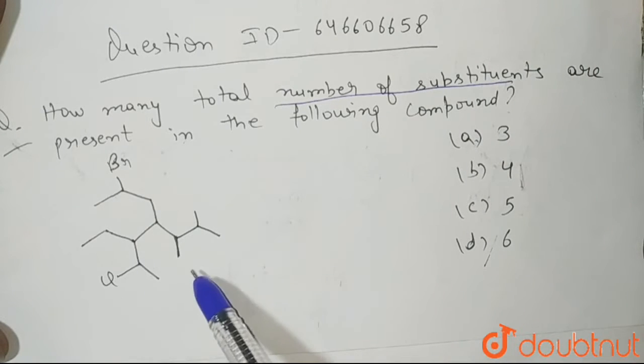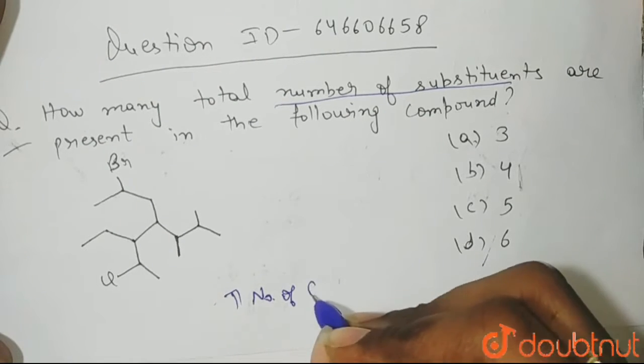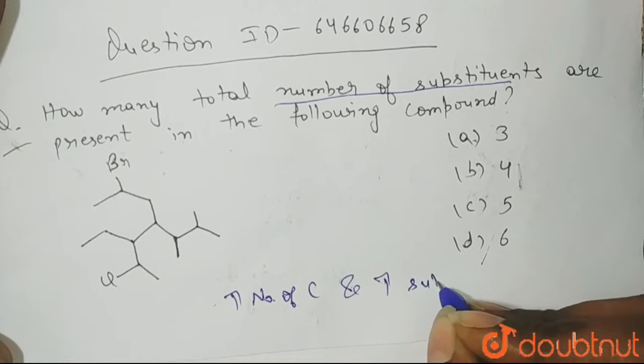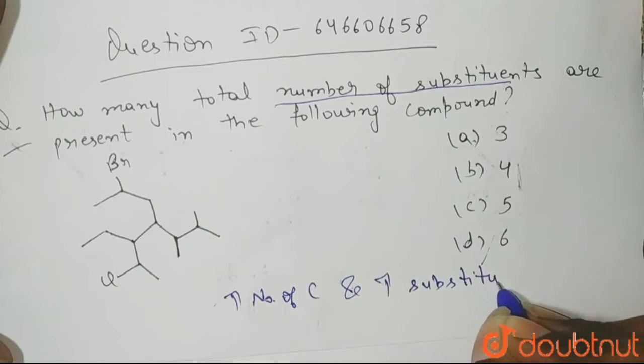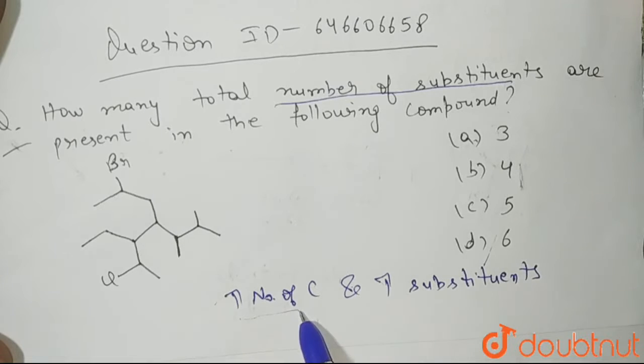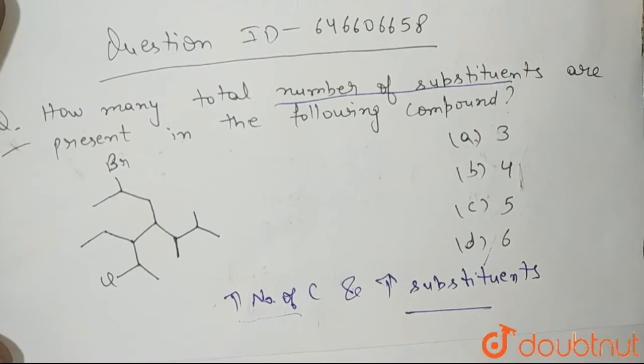First of all, in this structure we need to see which chain is our parent chain. What is parent chain? Parent chain is a chain which has highest number of carbon atoms and also has highest number of substituents. That means parent chain is a chain which has highest number of carbon atoms and also has highest number of substituents present on it.